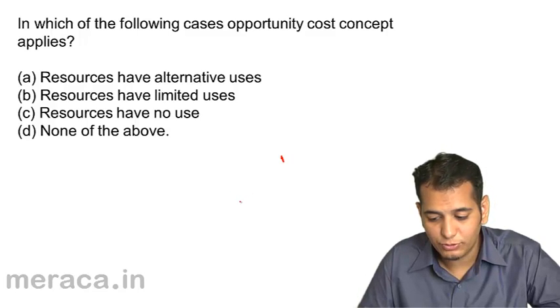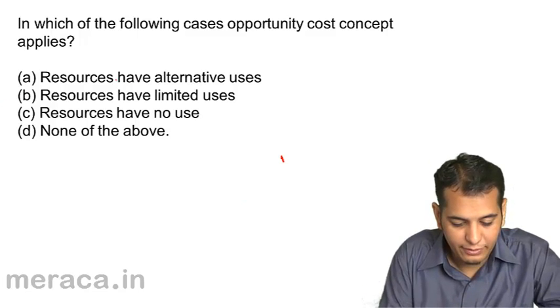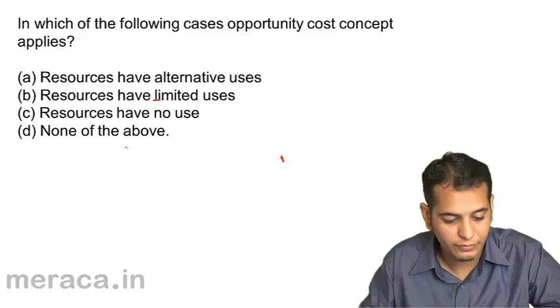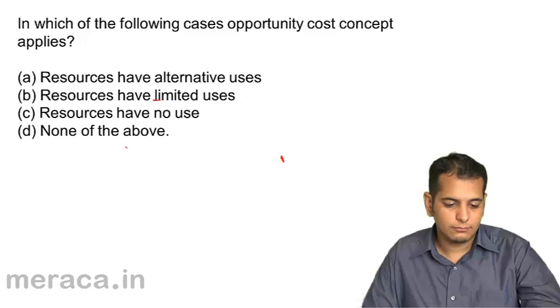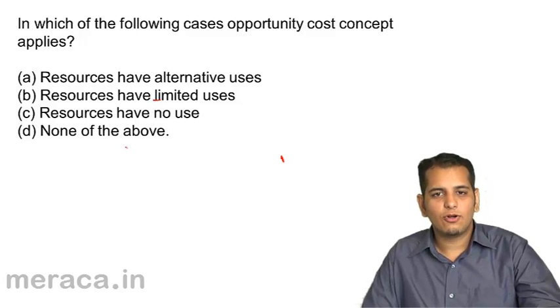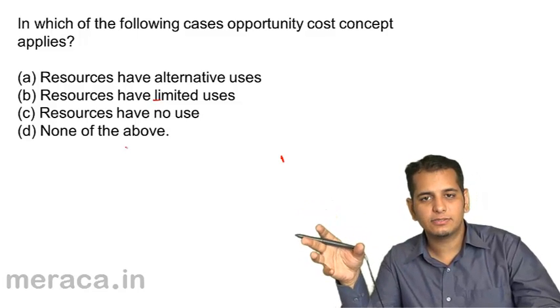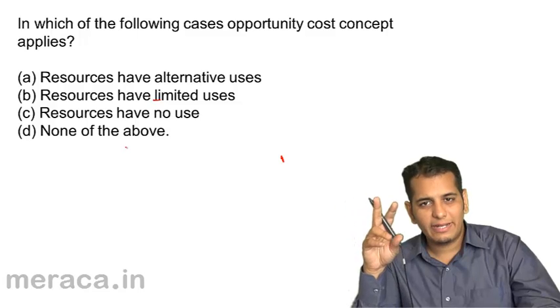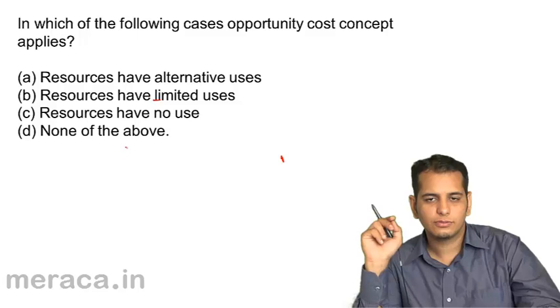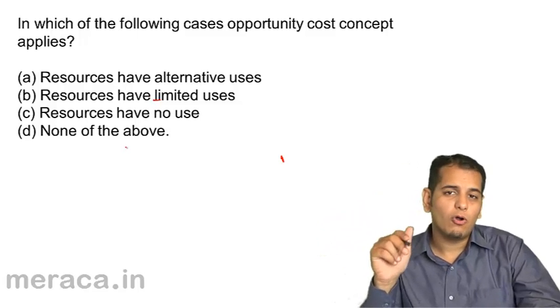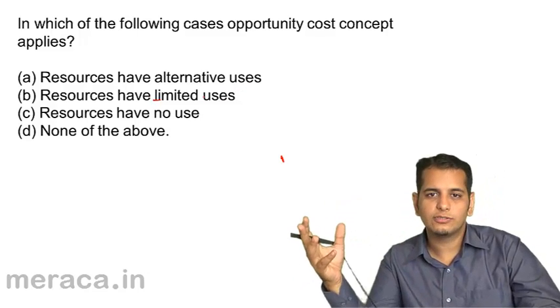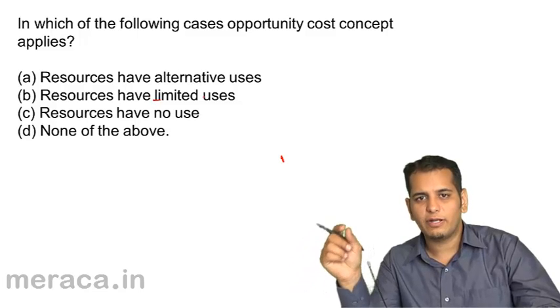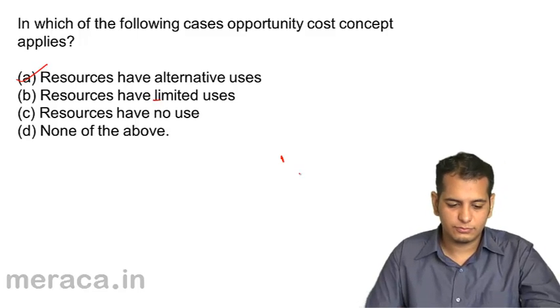In which of the following cases does opportunity cost concept apply? (a) resources have alternative uses, (b) resources have limited uses, (c) resources have no uses, (d) none of the above. Opportunity cost is the cost of the opportunity foregone. That means there were at least two opportunities, two choices that could have been made. The resources have alternatives which leads to choices, and the choice which is foregone, the cost of that alternative is called opportunity cost. Let's check.